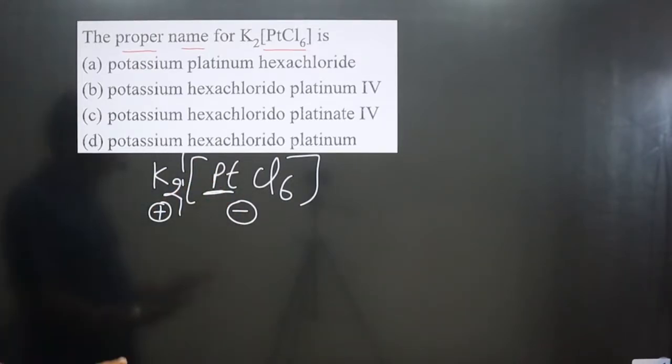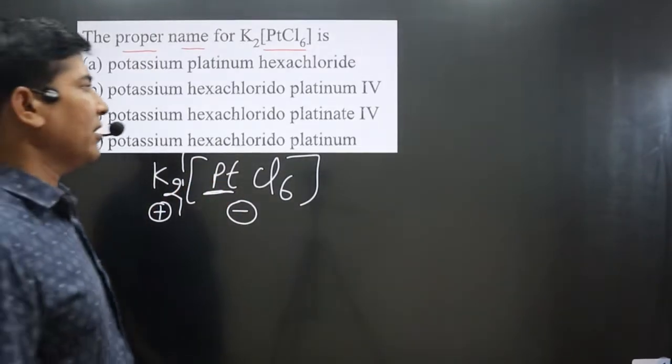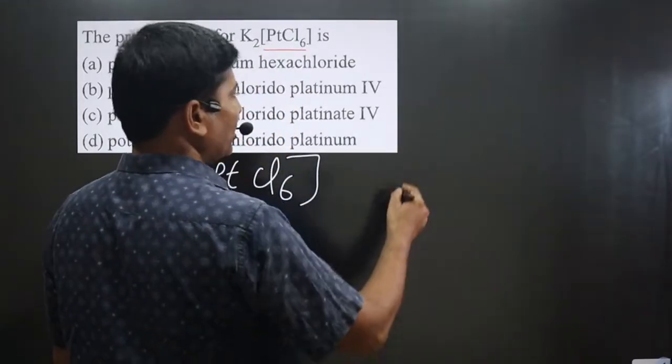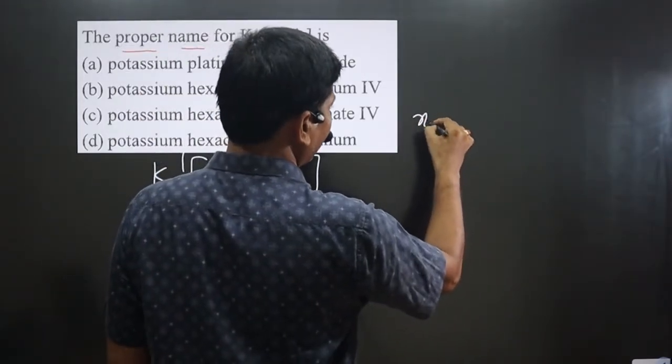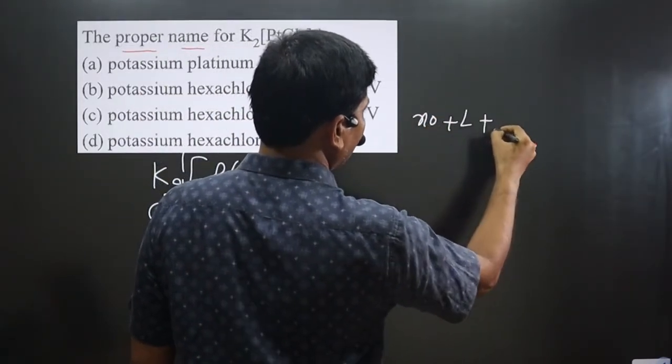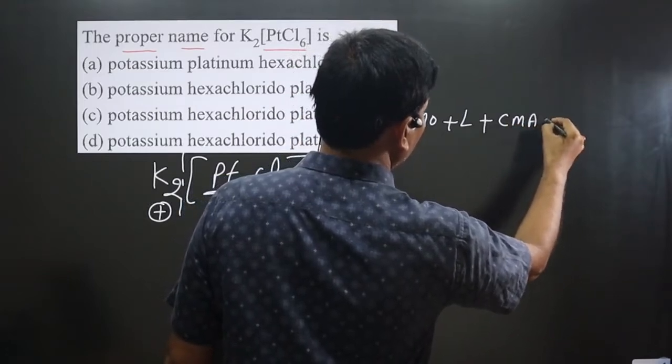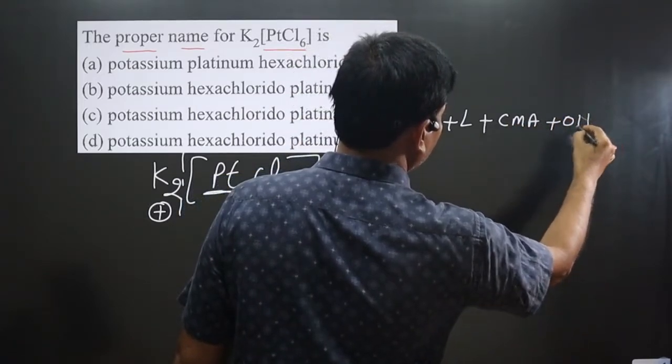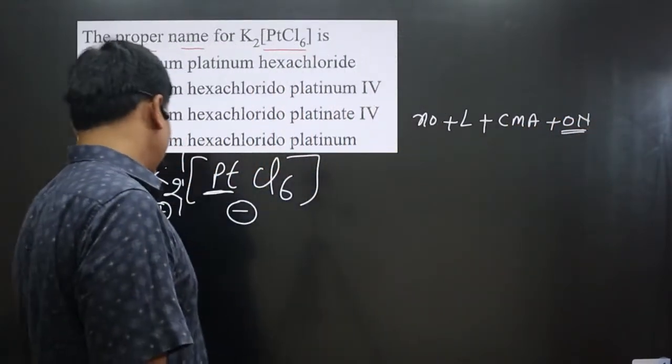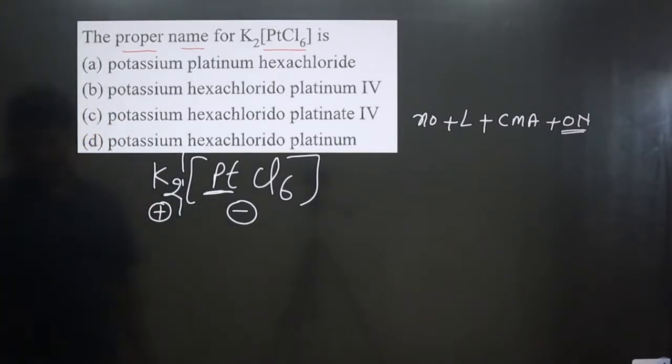It is platinum, so I will use platinate, because it is present in the anionic complex. Now pay attention carefully. The order for naming complex we follow is: number of ligands, then type of ligand, then central metal atom, and then the oxidation number written in Roman numerals.